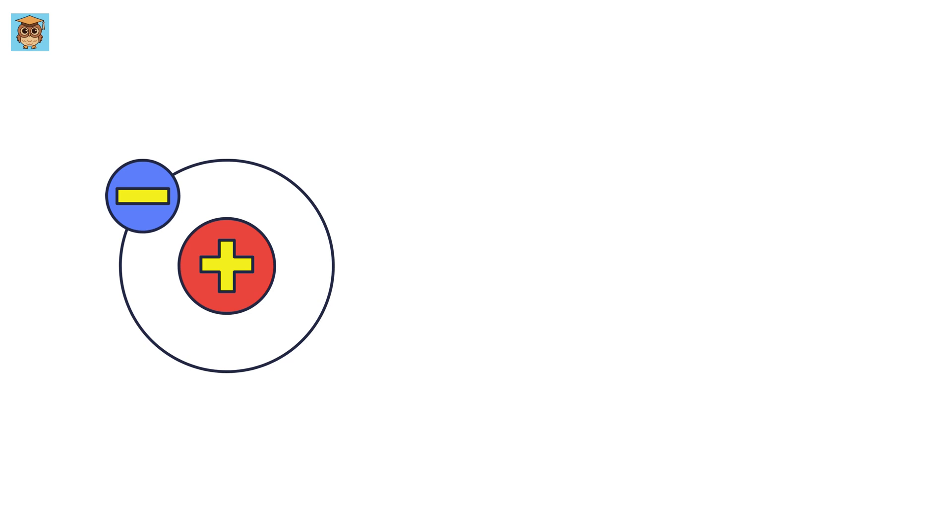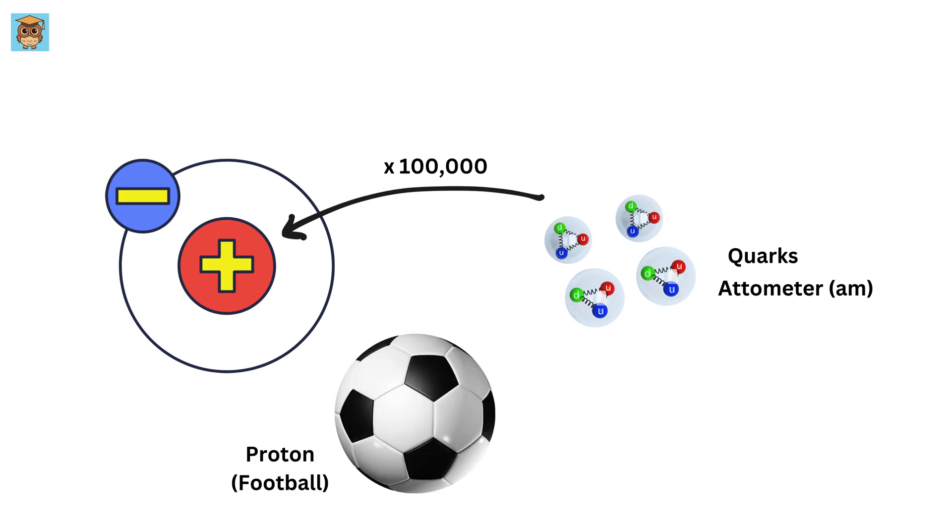But here's where things get even crazier. Protons and neutrons themselves aren't solid particles. They are made up of even smaller things called quarks. Quarks are so unbelievably tiny that they are about 100,000 times smaller than a proton. If a proton were the size of a football, a quark would be as small as a grain of sand next to it.